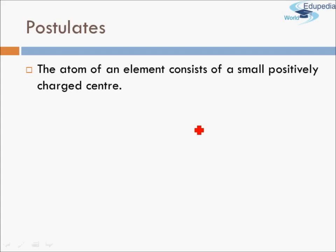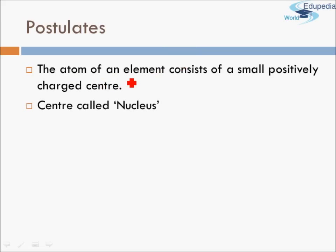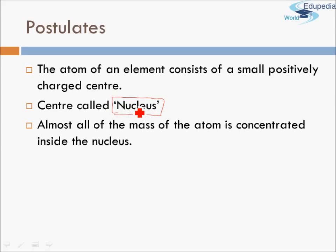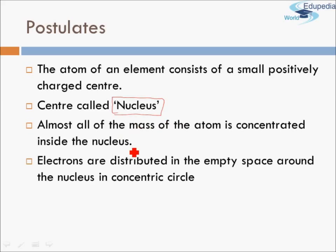So what were the postulates of Rutherford's model? First, the atom of an element consists of a small positively charged center. He said that any structure of atom will involve a positively charged center, and this center he called the nucleus — terminology which we still follow in modern times. Apart from that, he also said that most of the mass of the atom is concentrated inside this nucleus.